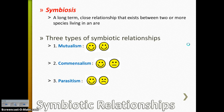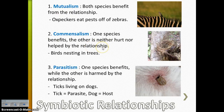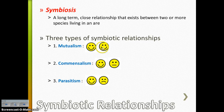Do you remember talking about symbiosis in seventh grade? Symbiosis is a long-term close relationship that exists between two or more different species living in an area. There are three types of symbiotic relationships: mutualism, commensalism, and parasitism. On your little chart, I want you to draw little happy faces, sad faces, and straight faces. Mutualism is when you have two happy faces. Commensalism is when you have one happy face and one straight face. Parasitism is when you have one happy face and one sad face.